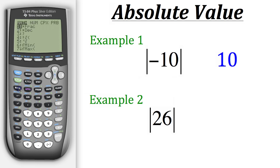We'll go to math and then scroll over to the num tab, and then we'll choose the first option, abs. Now we want to do the absolute value of 26, so we'll just put in 26 and then close the parentheses.